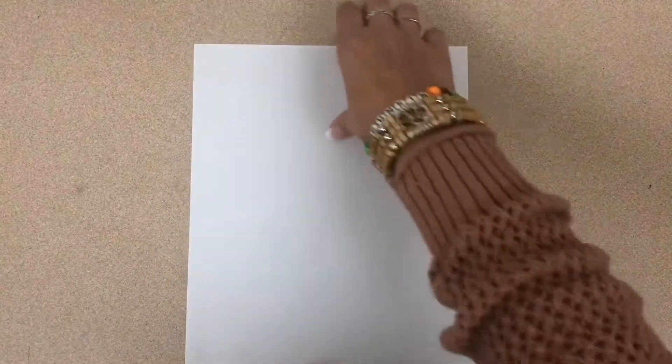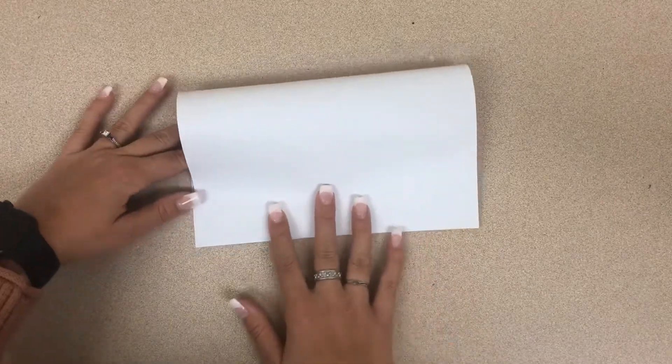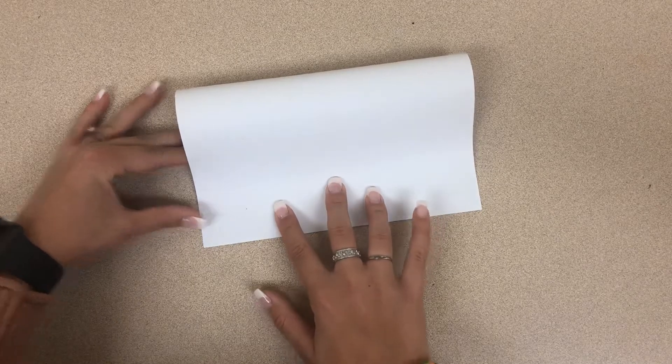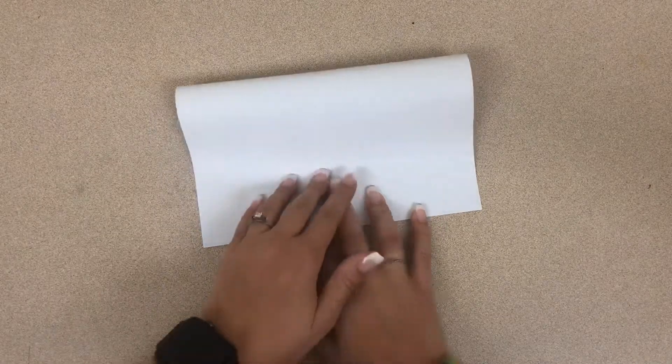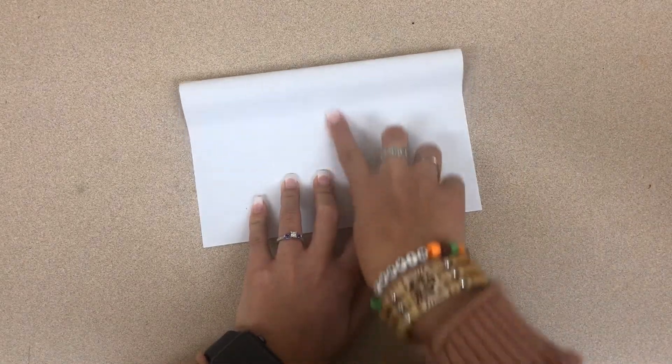Once your two corners are matched up, take one hand and hold that down in place. With another hand, take one finger and slide right down the middle until you've creased one side and the other side.